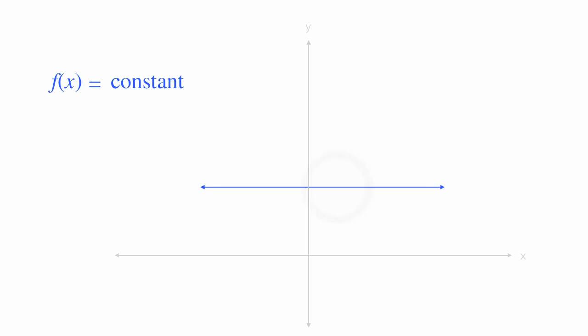So the slope of a constant is zero. I'm going to calculate for you the slope of a constant and show it to you graphically.